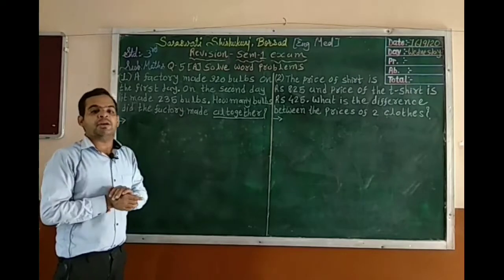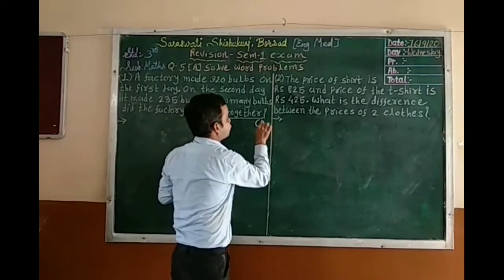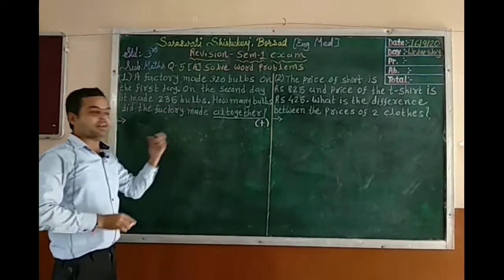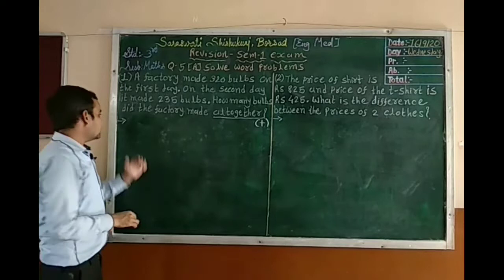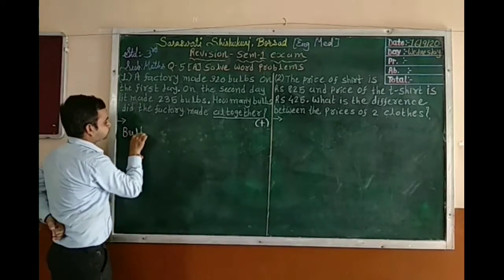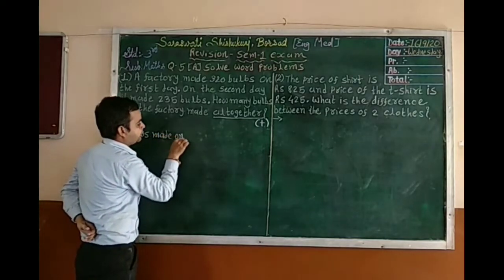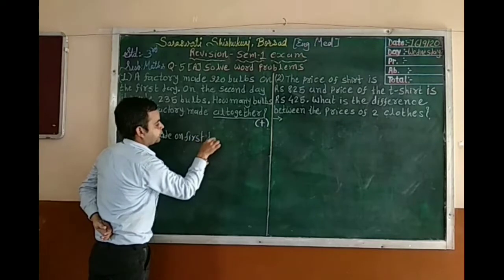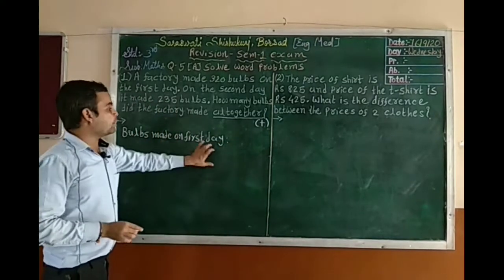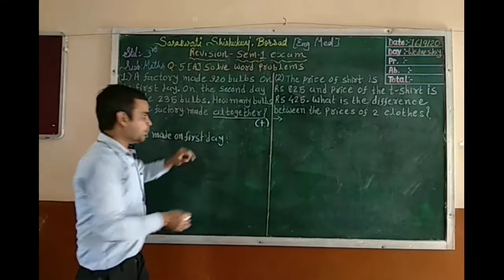Here we have to find the total number of bulbs, so we have to do addition. Understood? So how can we write the answer? Here, bulbs made on the first day — how many bulbs were made on the first day? You can see here: 320 bulbs.